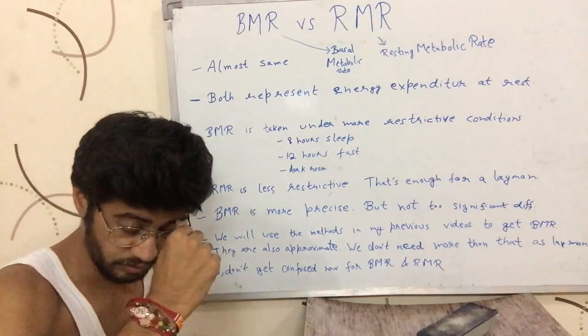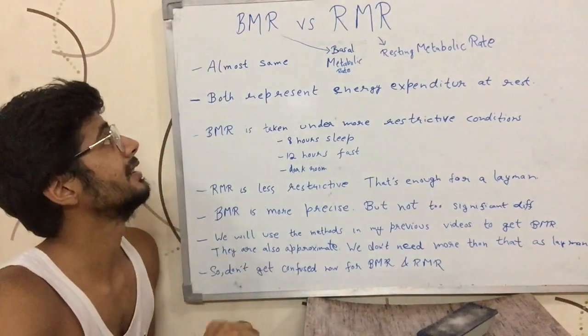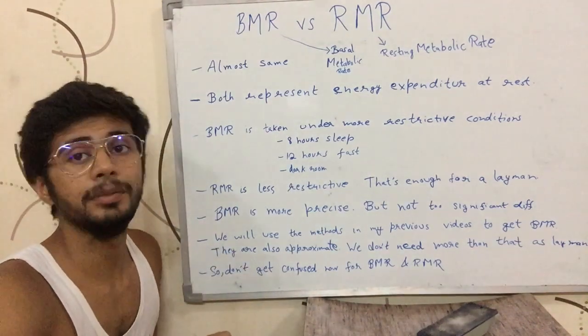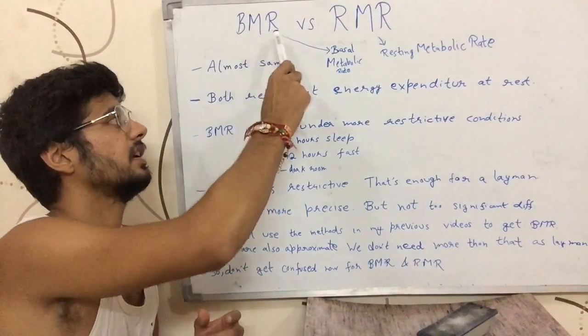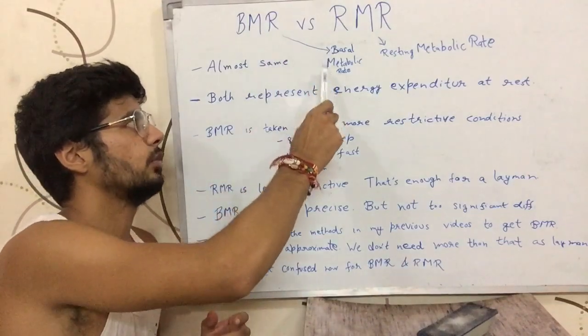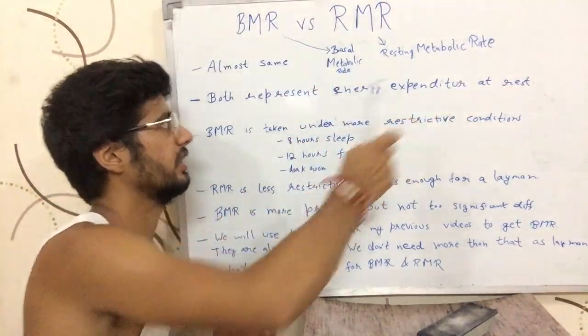Hi guys, this is Sushant Kutcher. Today we are going to talk about what is the difference between BMR and RMR. BMR is basal metabolic rate, RMR is resting metabolic rate.